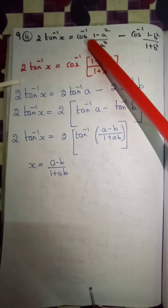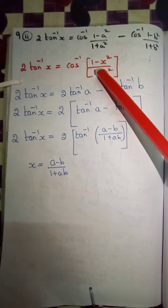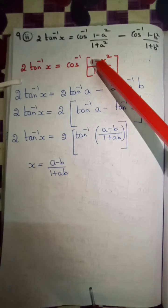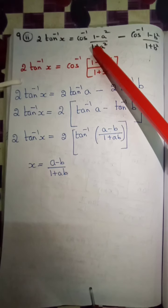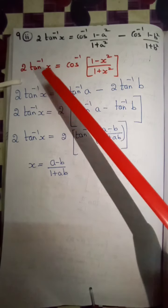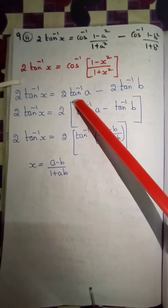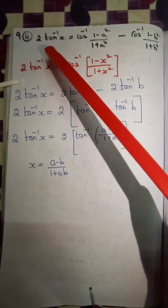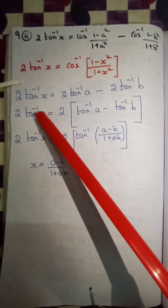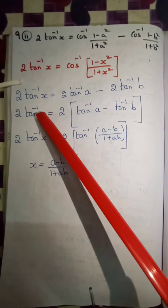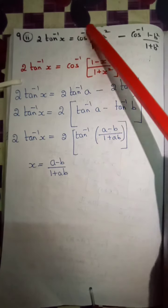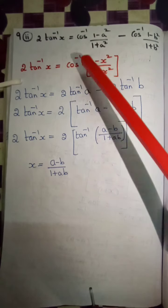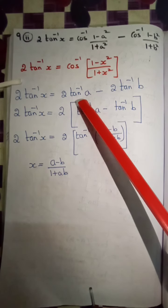This is a property from the book. Now, in applying the property, the LHS is equal to 2 tan inverse of x, and the RHS is equal to 2 tan inverse of a. We use the property: 2 tan inverse of a is equal to cos inverse of (1 minus a square by 1 plus a square).